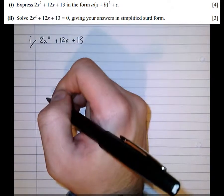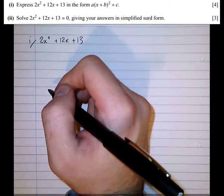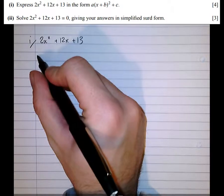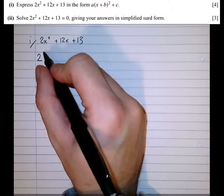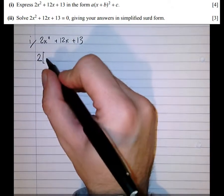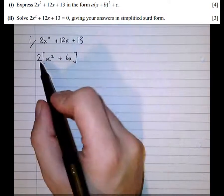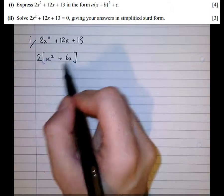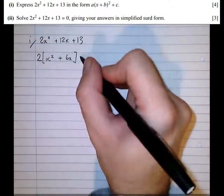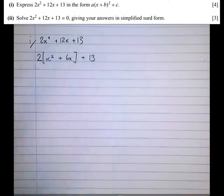Notice that the x² has a coefficient of 2, so it's difficult to complete the square form. Now we can solve this problem by taking out a factor of 2 to leave x² + 6x in the bracket. If we multiply that out, we'll get 2x² + 12x, just like in the line above, with a +13 tagged on at the end.